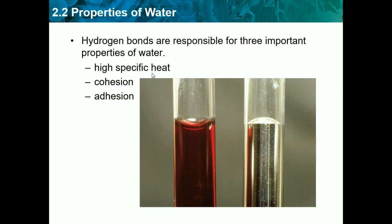Cohesion is the attractiveness of the same substances — water attracted to water is cohesion. Water has high cohesion, so water generally likes to attract to itself. For example, if you spill water on a table, you'll see a bunch of little clumps of water; it won't just spread around the whole way. On a leaf is another example — you would see water droplets, not mist or a whole layer of water. They're clumped together.